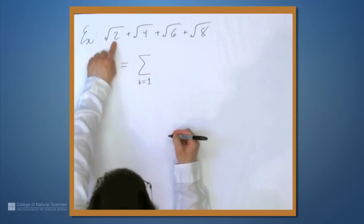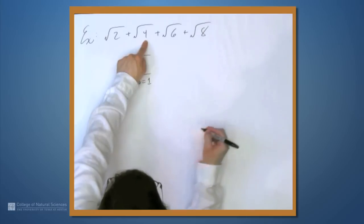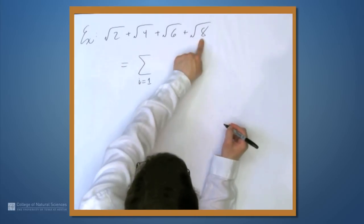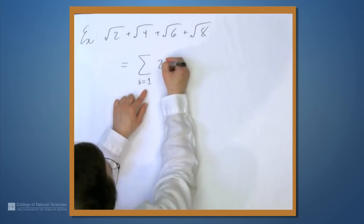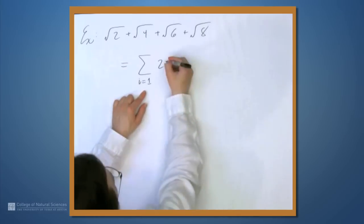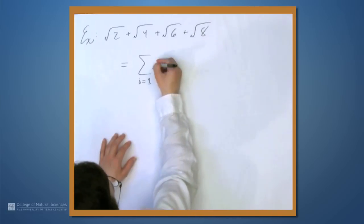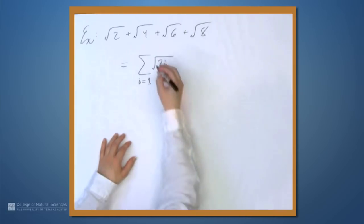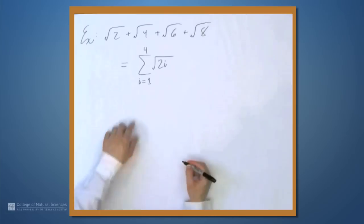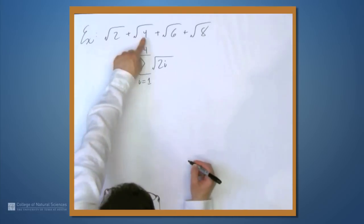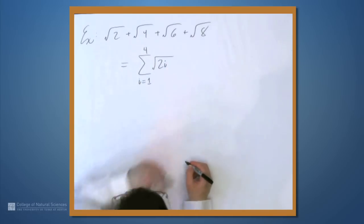We can't just put i in here because the first thing we want is a 2. But notice the next thing is 2 more than 2, and the next thing is 2 more than 4, and then the next thing is 2 more than 6. So we're incrementing by 2. And to get an increment by 2, we'll just multiply i by 2. So 2i gives us 2, 4, 6, 8, 10, 12, and so on. And so we'll throw a square root there. And we're going up to 8, so we want the top to be 4. So i equals 1 term gives us the 2, i equals 2 gives us 4, 3 gives us 2 times 3, which is 6, 4 gives us 2 times 4, which is 8.